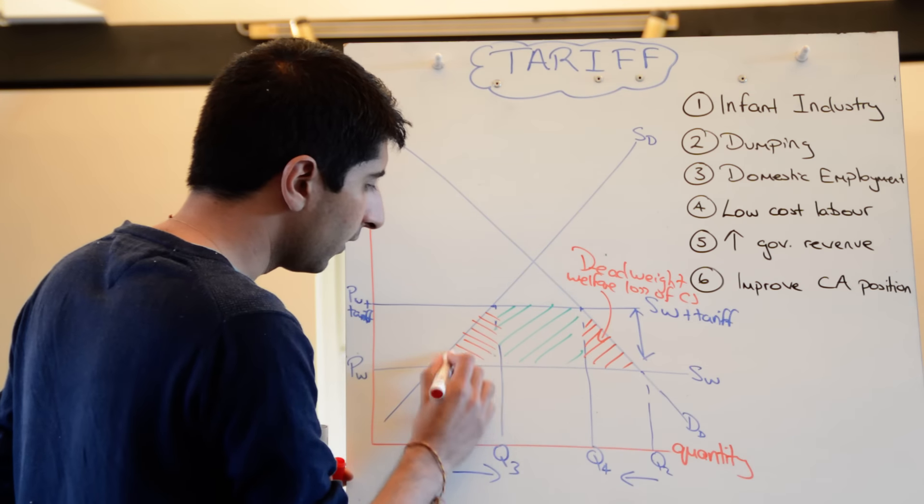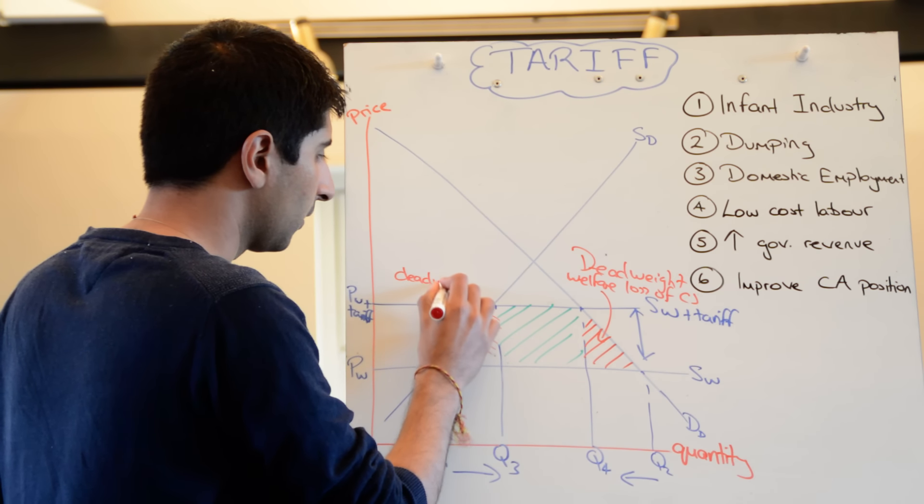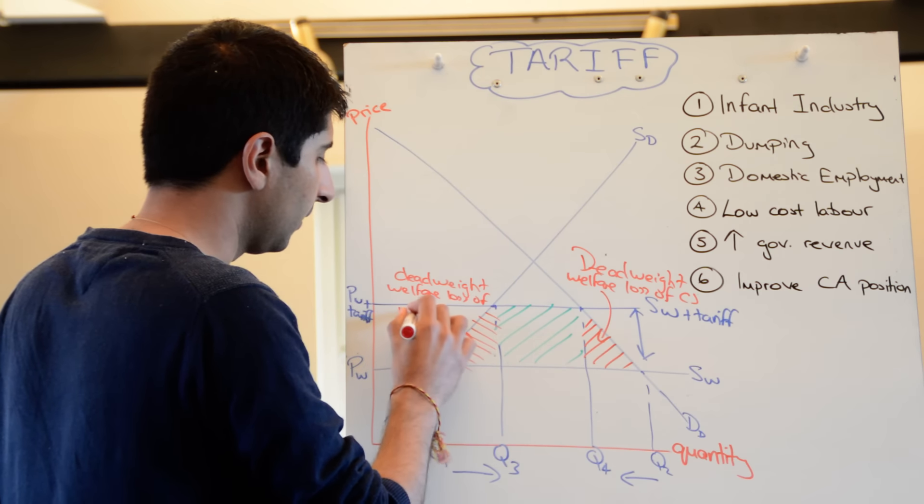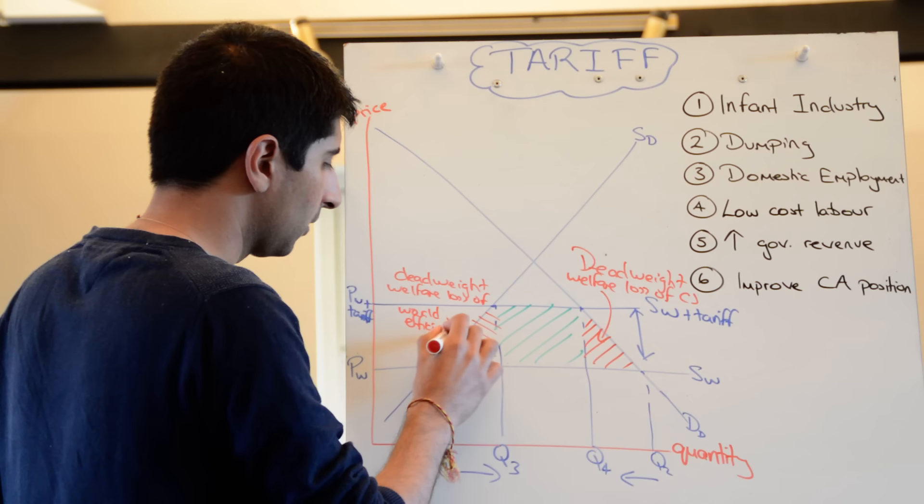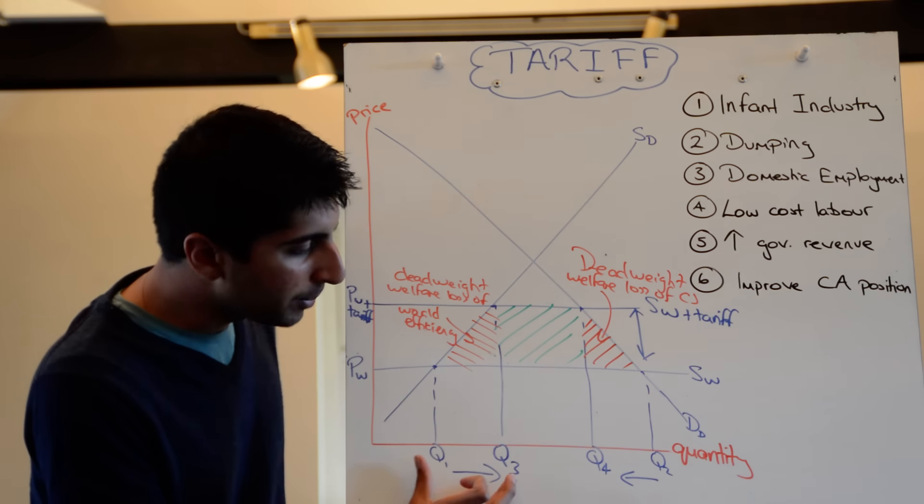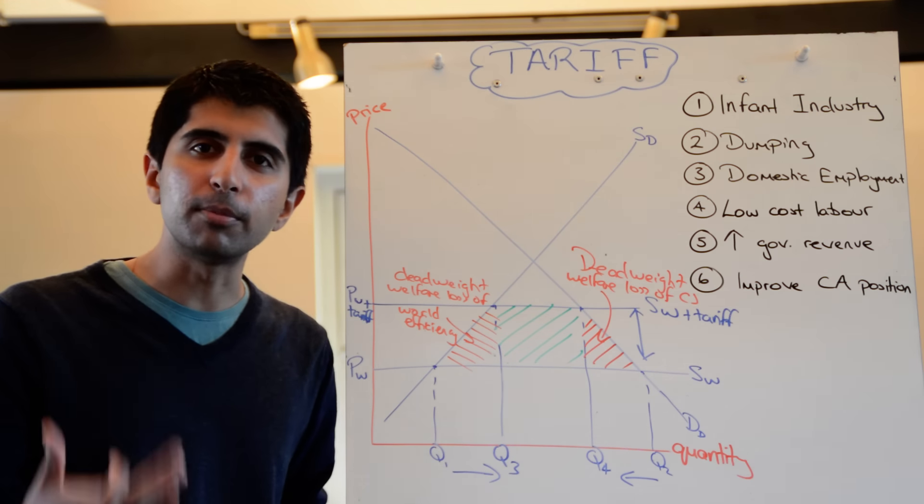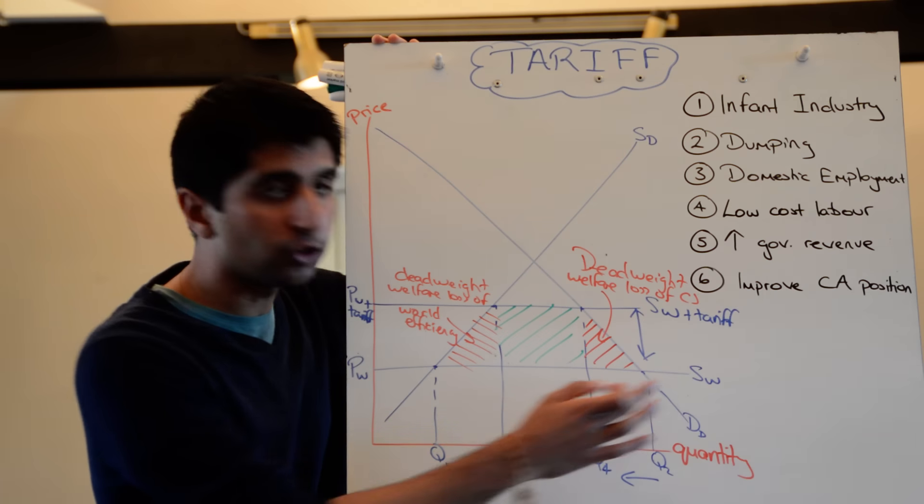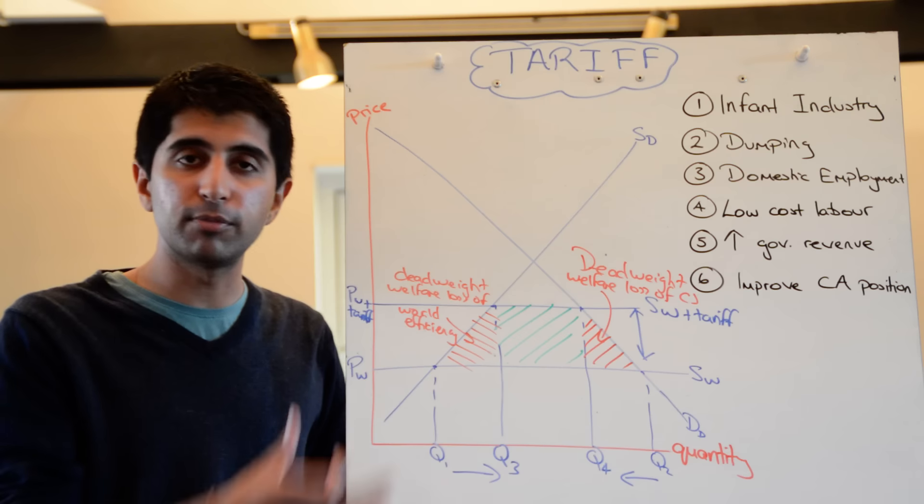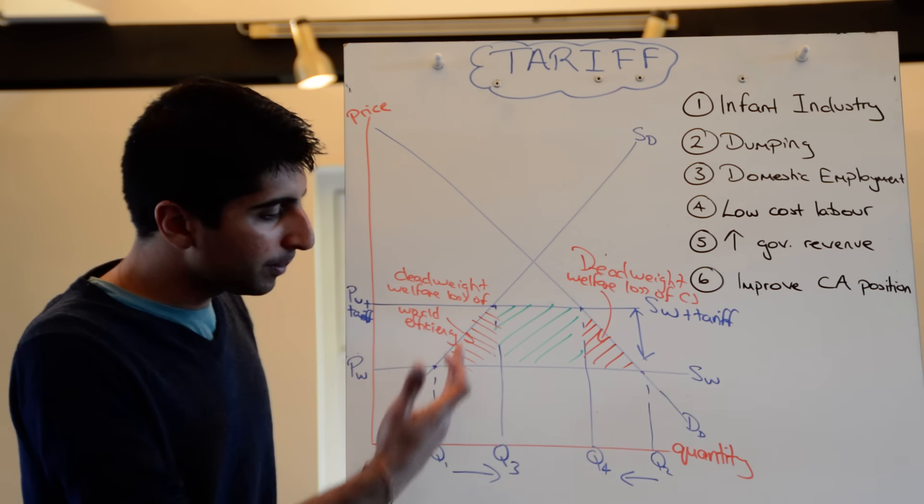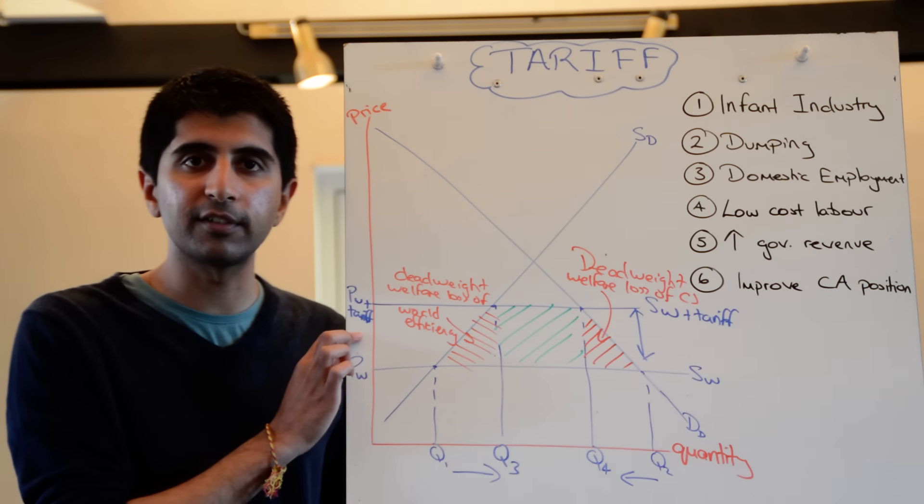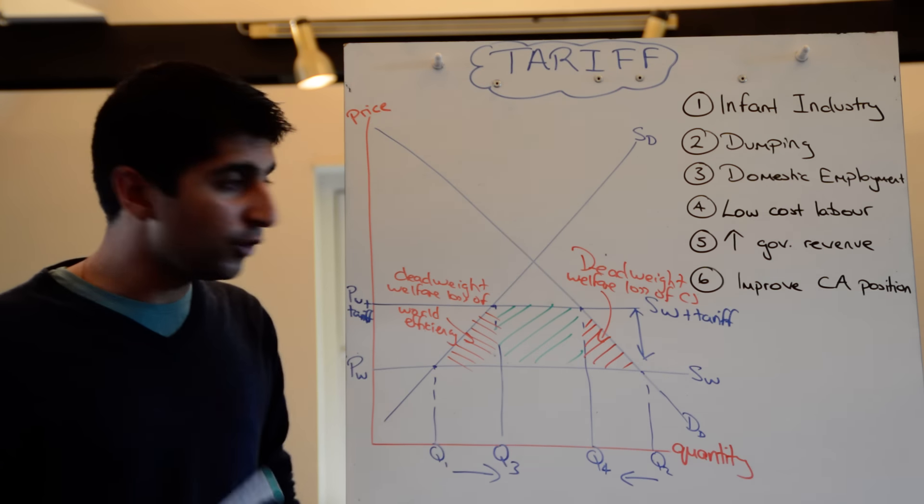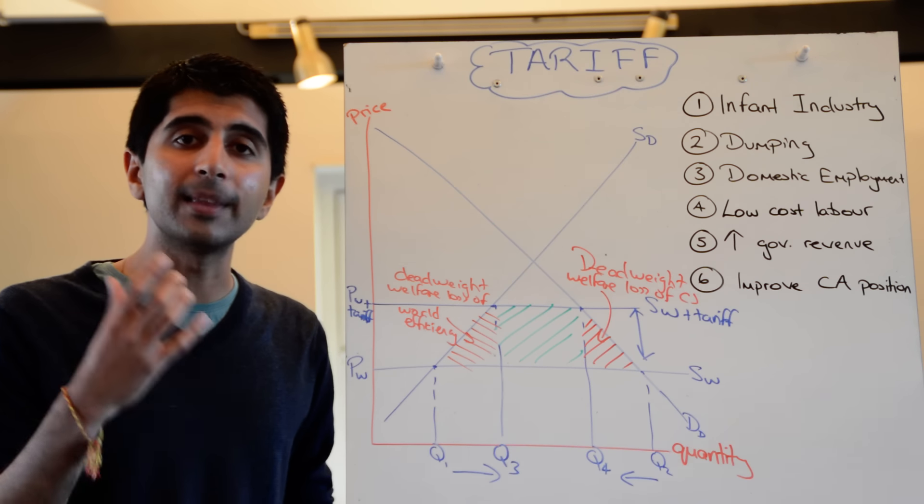And this triangle here represents a deadweight loss, a deadweight welfare loss. But this time it's a world efficiency. What we're trying to say here is because domestic suppliers are producing extra units from Q1 to Q3 when they shouldn't be producing it, there is a loss of efficiency that comes from it. So those units there were previously being supplied by very efficient world suppliers. Suppliers that have the comparative advantage in producing whatever this product would be. But now with domestic suppliers actually producing more from Q1 to Q3 because of an artificial price advantage with the price going up, they have now decided to supply these extra units even though they are less efficient at producing so.